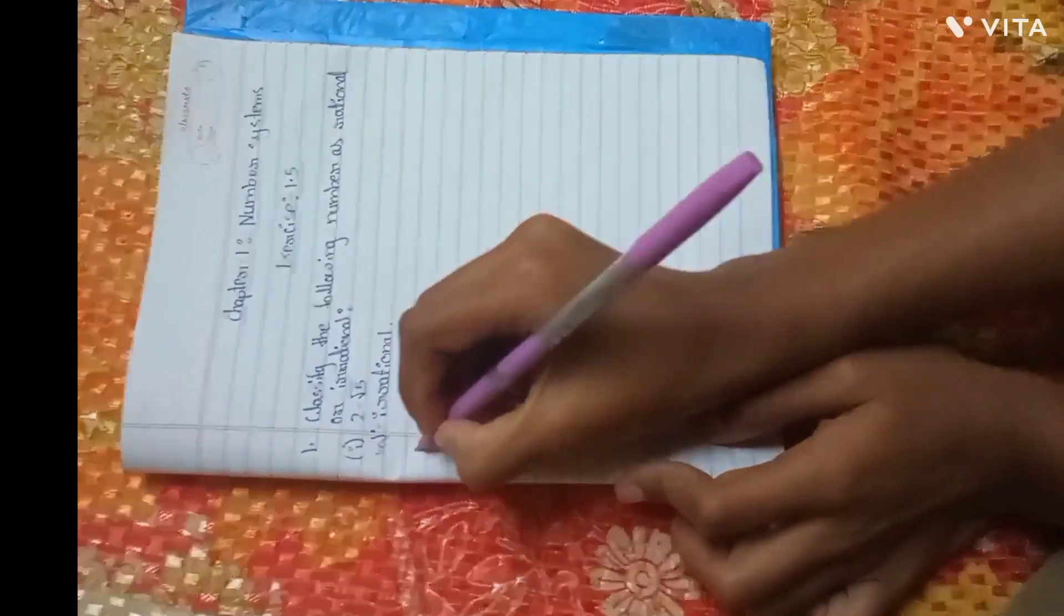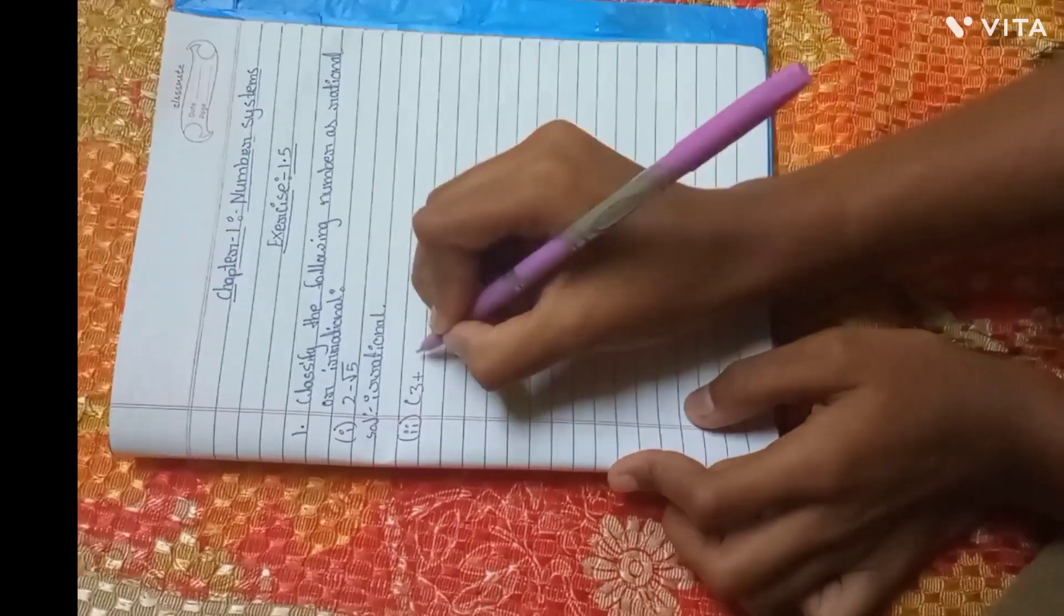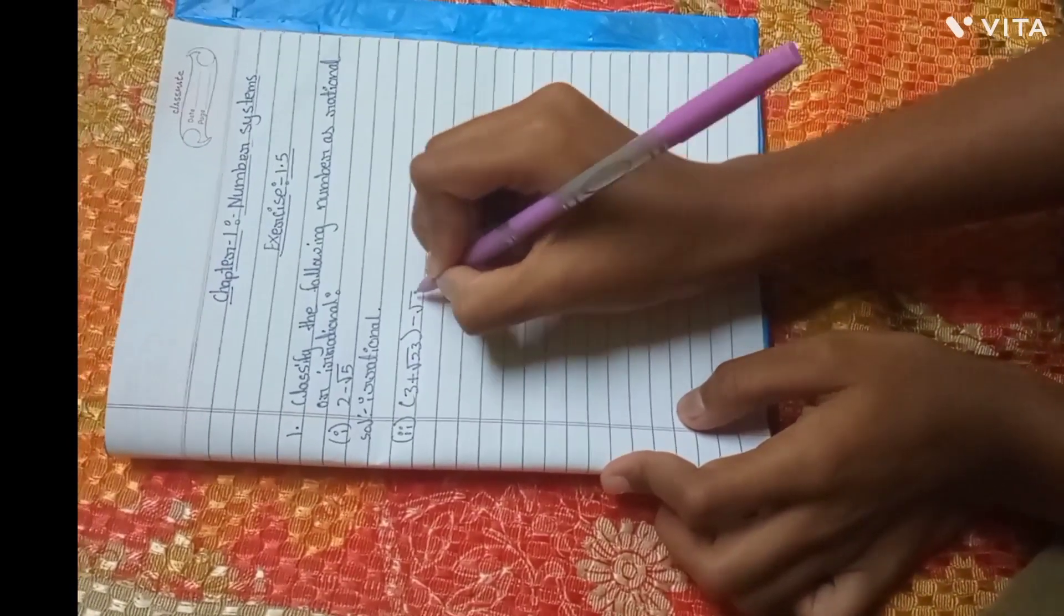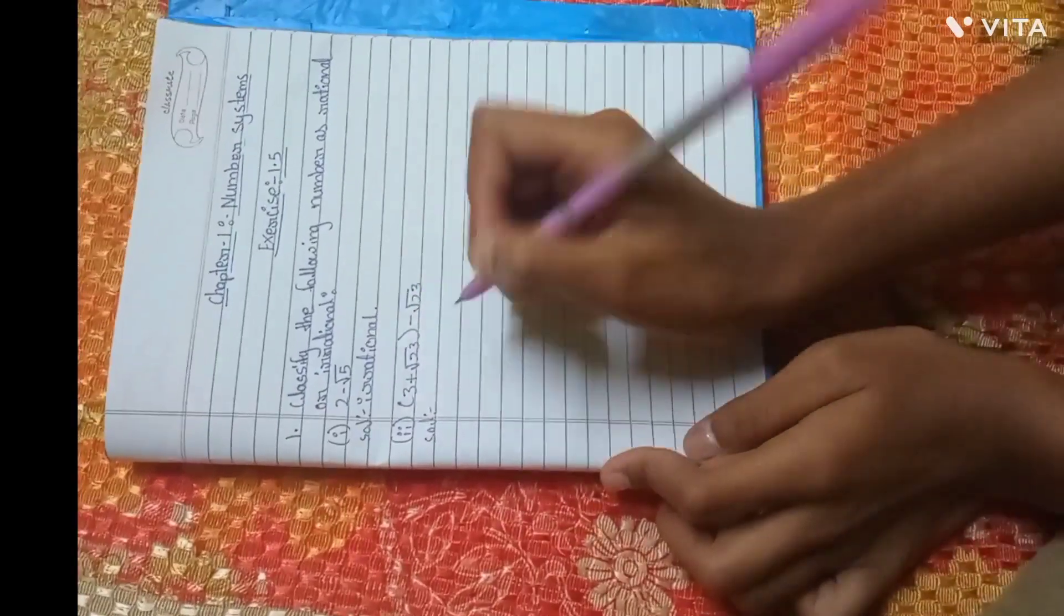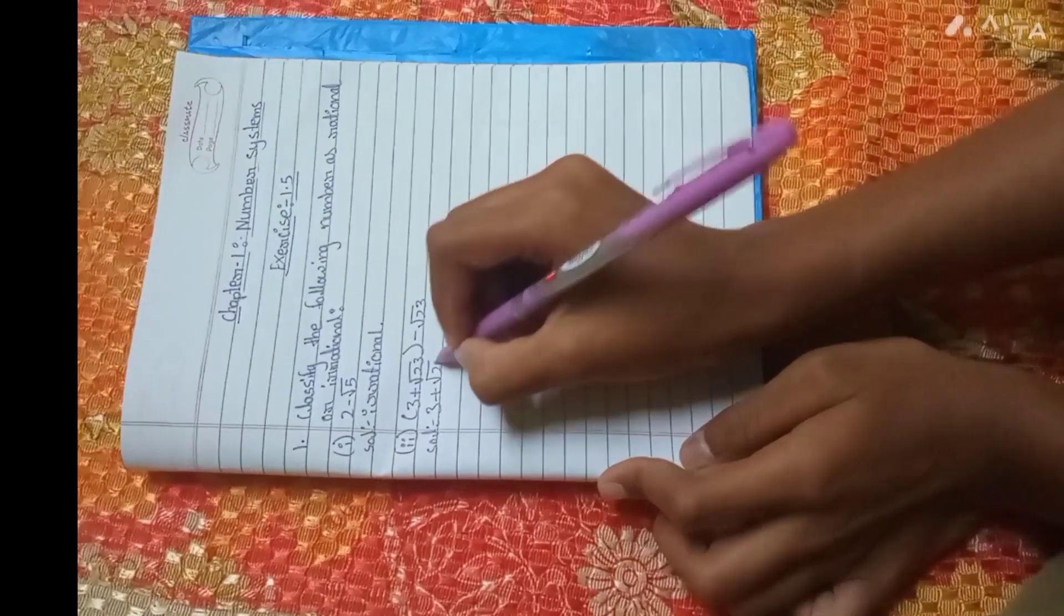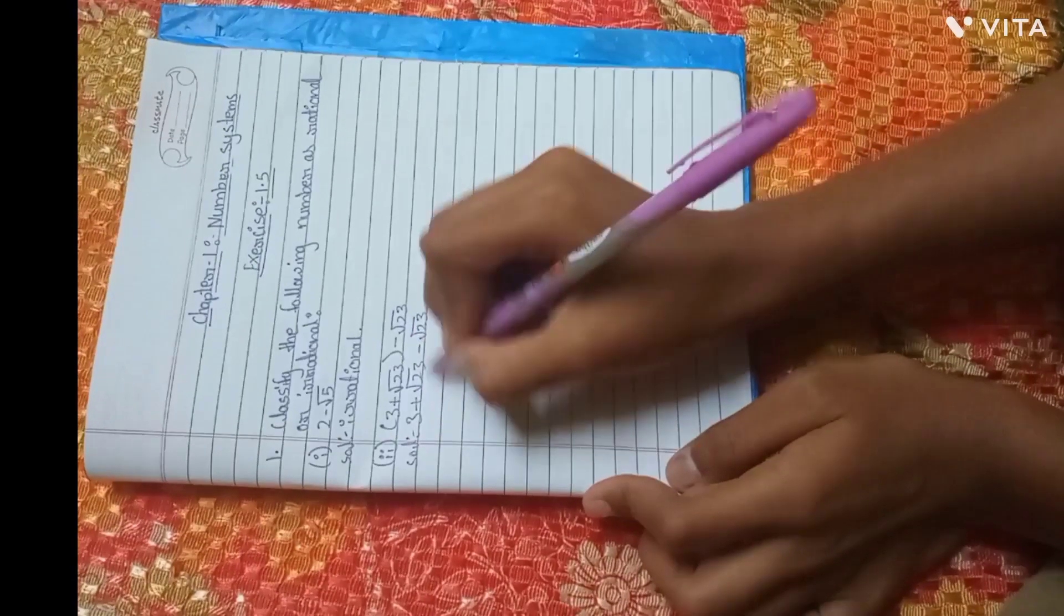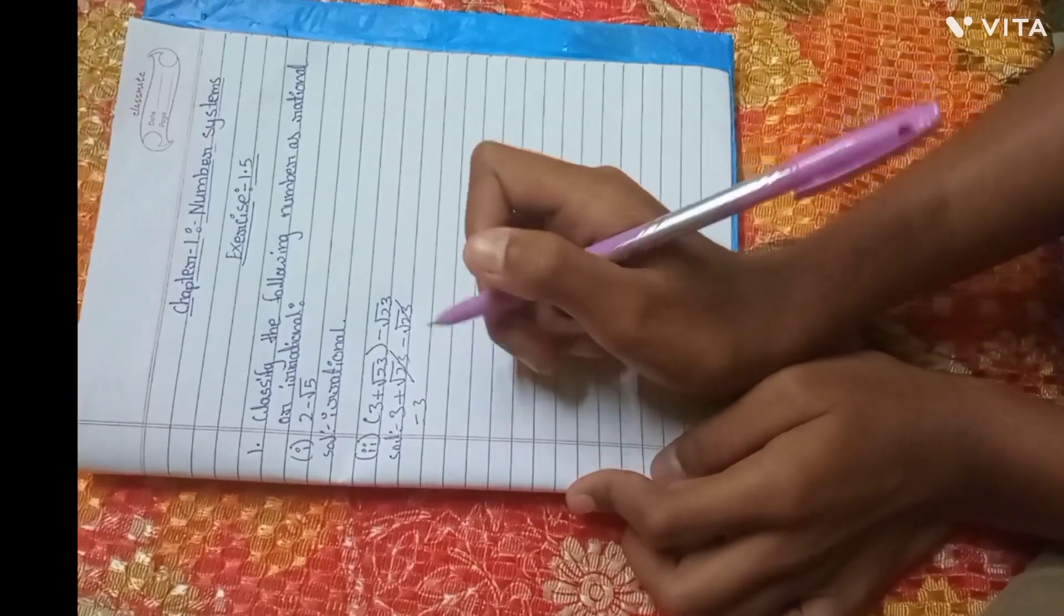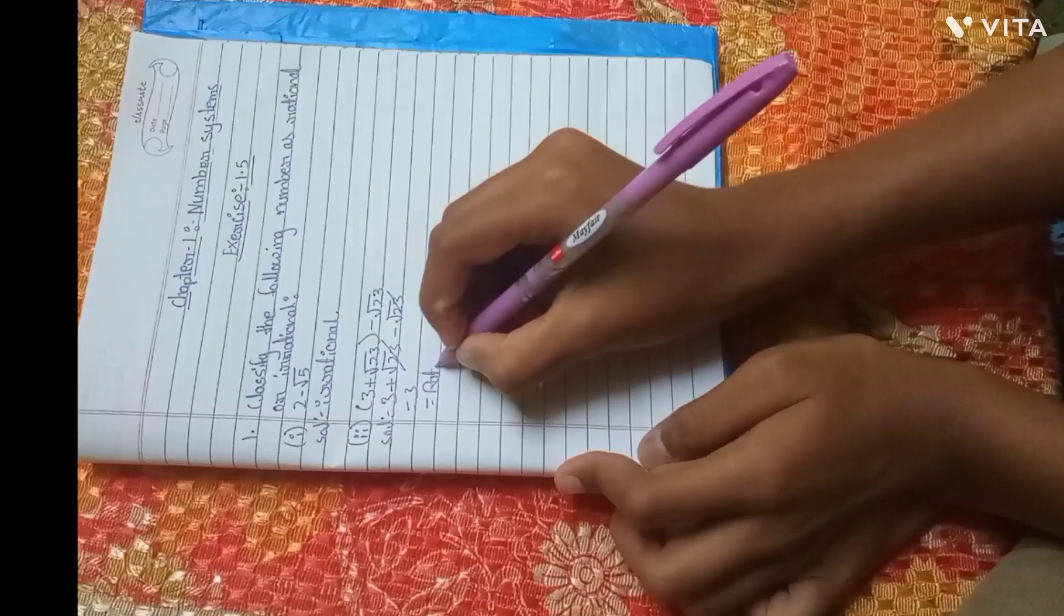Then second have bracket 3 plus root 23 bracket minus root 23. Solution: We can write in direct bracket 3 plus root 23 minus root 23. 3 plus minus root cuts, so here is 3. This will be 3. This will be rational. Right? We will write rational.